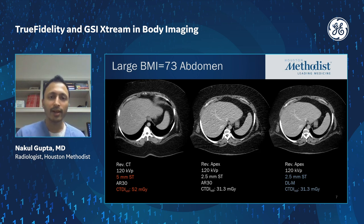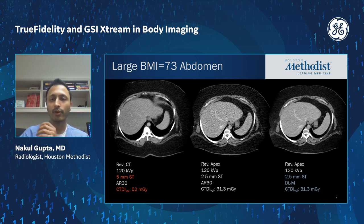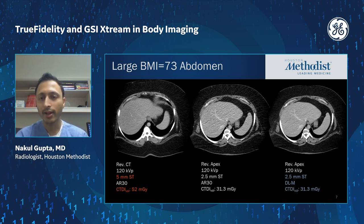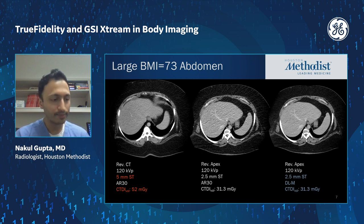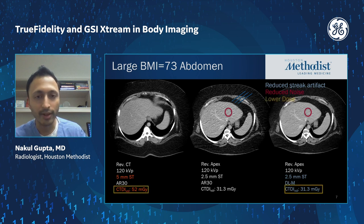One use case is enlarged patients. The two images on the right are the same image at the same level, 2.5 millimeter slice thickness from the same scan, same patient — reconstructed with ACER-V and then deep learning medium. The deep learning-based reconstruction on the far right has much lower noise and reduced streak artifacts. Comparing with the prior study from the same patient on a REVCT without deep learning, we achieved all that with lower dose and lower slice thickness as well.